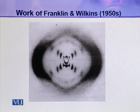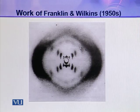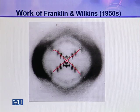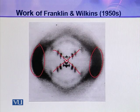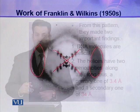This is the X-ray diffraction pattern obtained by Franklin and Wilkins. In this picture, you can see this cross of spots. This cross of spots indicates that the DNA fiber is helical in nature. And these two bands on the left and right side of this picture show the recurring bases in the polynucleotide chain.